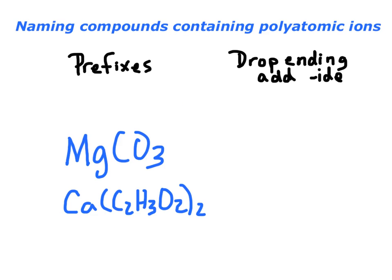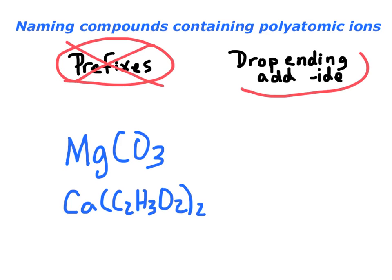So how do you name compounds containing polyatomic ions? Here's what you don't do: you don't use prefixes. Prefixes are only needed if there are multiple ways to join elements up, and since these are ionic compounds, there's only one way — so no prefixes are needed. Also, you never drop the ending of a polyatomic ion and add -ide. If it's just a non-metal at the end that's not part of the polyatomic ion, then you would drop the ending — but for a polyatomic ion, you state it the way it is.